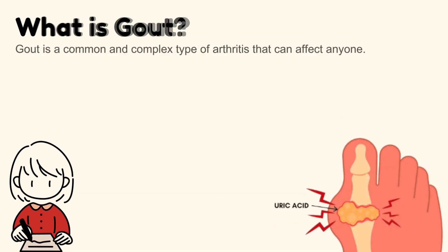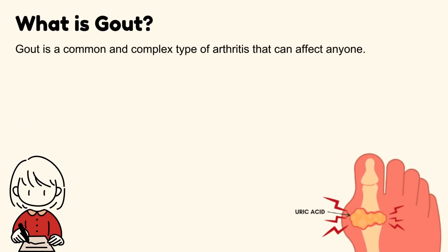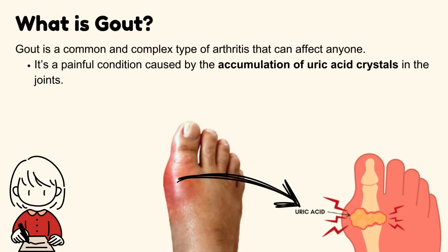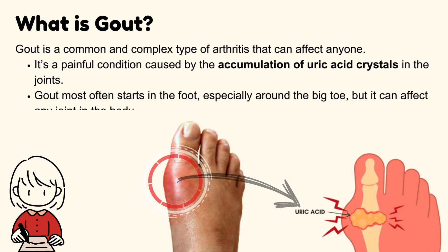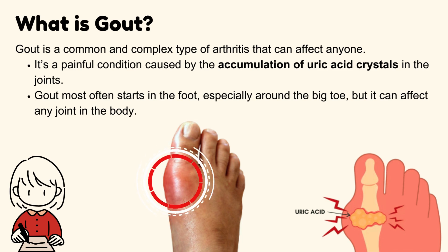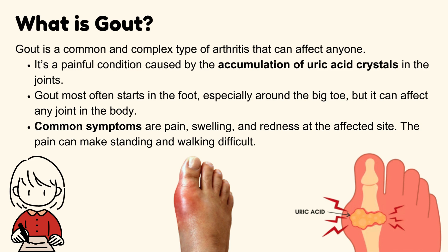What is gout? Gout is a common and complex type of arthritis that can affect anyone. It's a painful condition caused by the accumulation of uric acid crystals in the joints. Gout most often starts in the foot, especially around the big toe, but it can affect any joint in the body. Common symptoms are pain, swelling, and redness at the affected site. The pain can make standing and walking difficult.